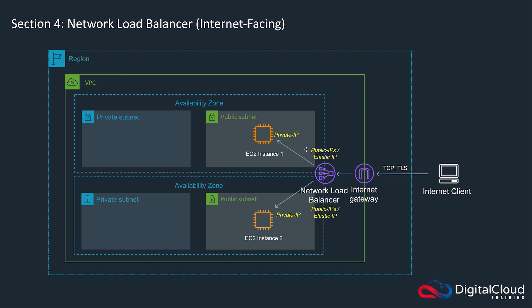One of the other differences you may notice with a network load balancer is public IPs and elastic IPs. With an application load balancer it does pick up public addresses but they're not visible to you — you only see the DNS address. With a network load balancer you can either allow AWS to configure a public IP, or you can associate an elastic IP so you know exactly what IP address you need, and you can do that on a per-subnet level.